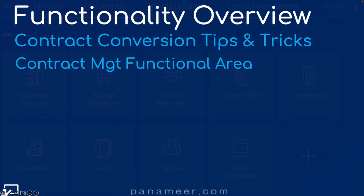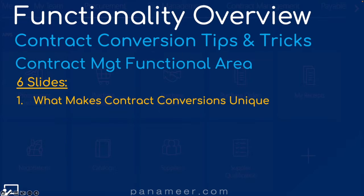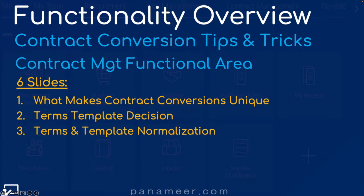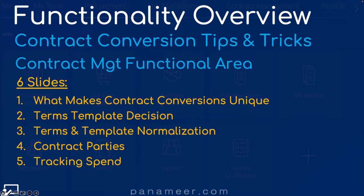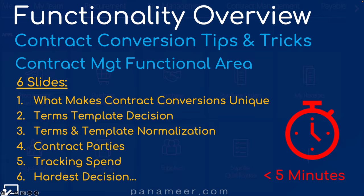This functionality occurs within the contract management functional area. Click the link above to watch a quick video explaining that functional area. I'm going to use the following six slides to explain this topic: what makes contract conversions unique, terms template decision, terms and template normalizations, contract parties decision, tracking spend decision, and how we handle the hardest decision. I'm going to do this in less than five minutes, so let's get started.